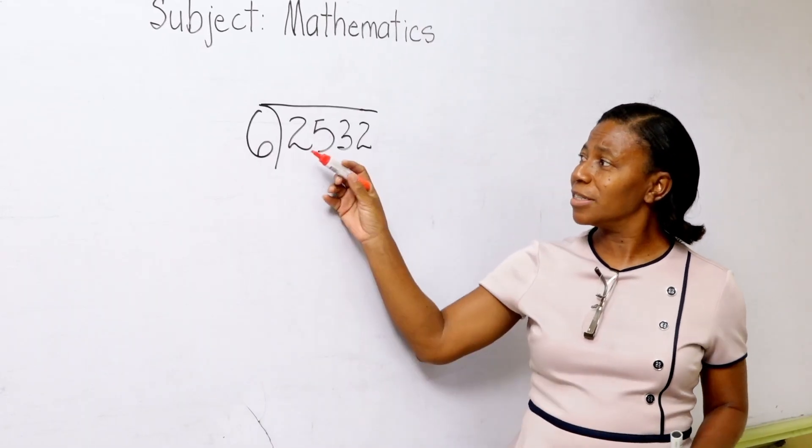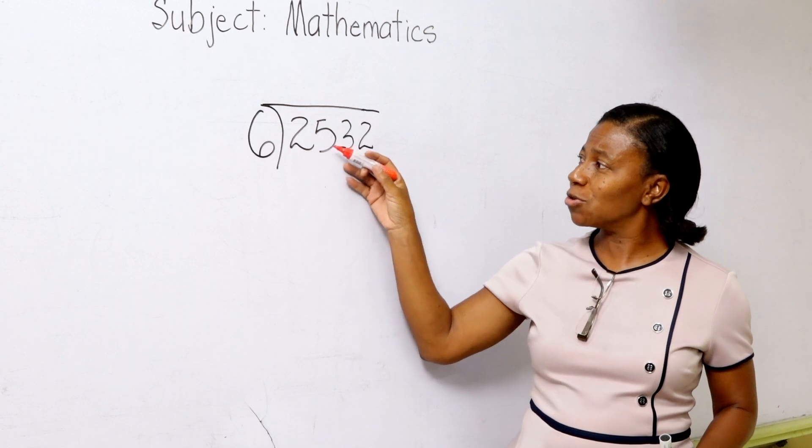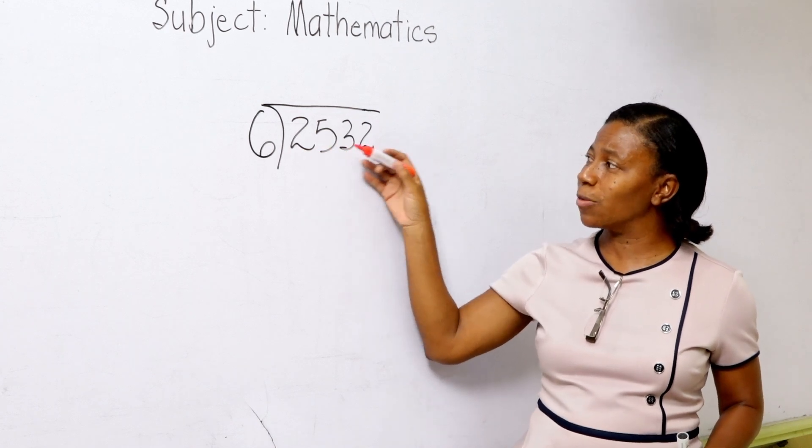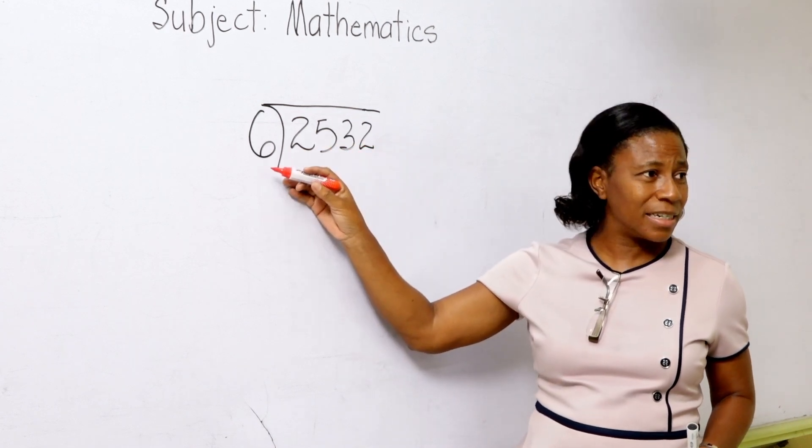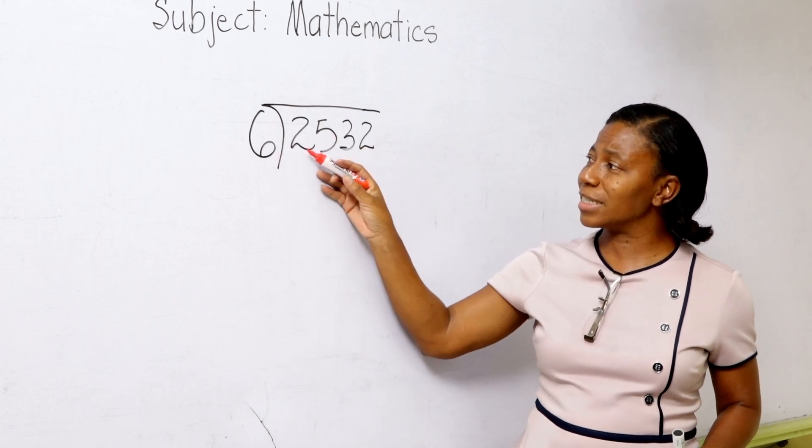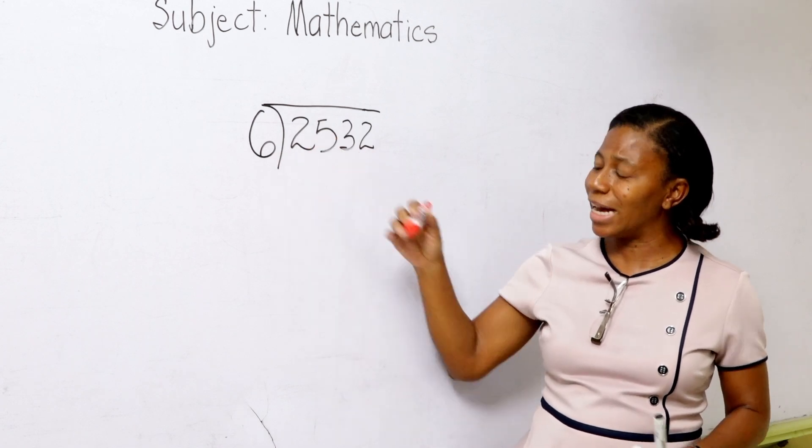So here we have 2532, and we are going to divide it by 6. So we are going to go first to say 6. We are going to say 2 divided by 6. We can't.